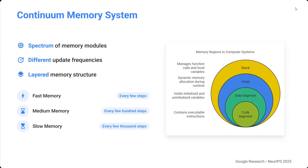They have also introduced a concept called the Continuum Memory System — a spectrum of memory modules with different update frequencies. For example, in a 15-layer model, the first five layers update at one rate, the next five at a different rate, and the last five at yet another rate. These correspond to fast memory, medium memory, and slow memory — information stored in the continuum memory system that the model can fetch while updating.